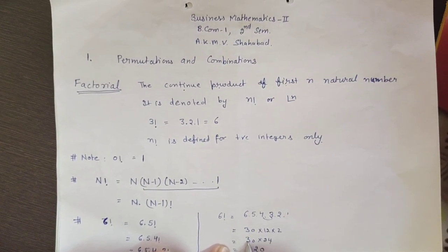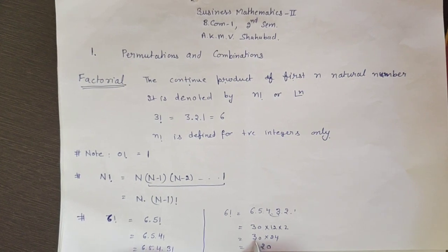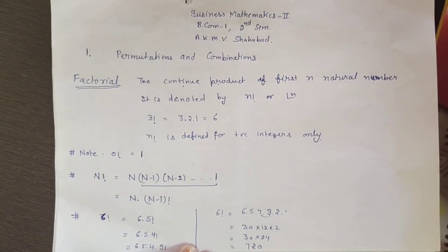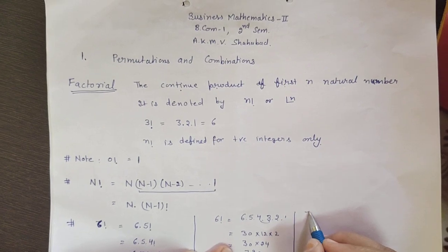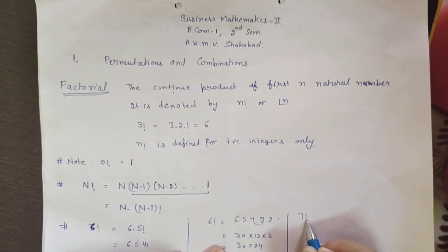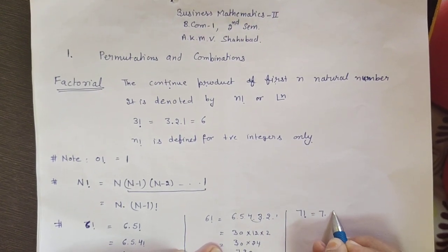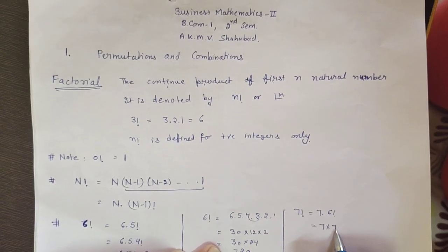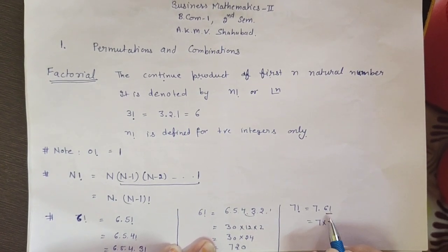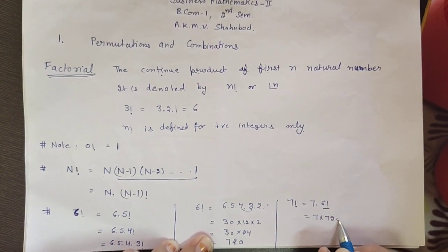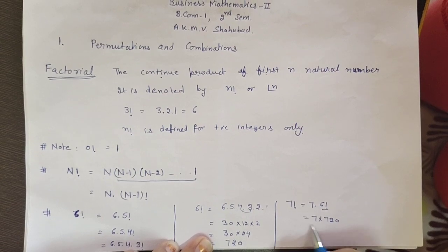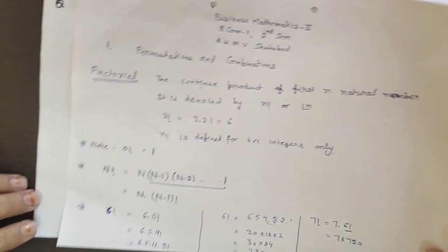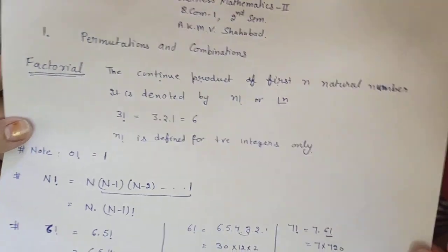If there is a requirement of 7 factorial, this is 7 × 6 factorial. I already calculated 6 factorial as 720, so 7 factorial is 7 × 720 = 5040.